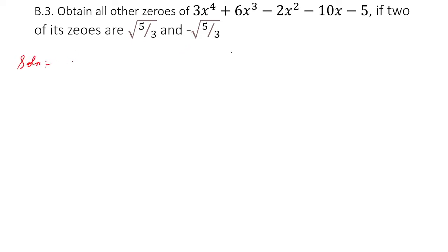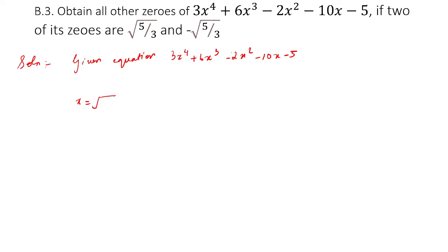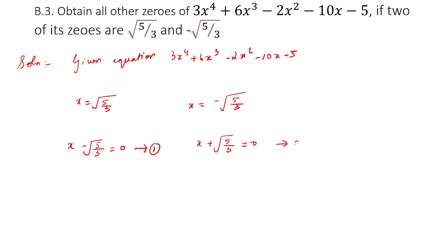Our given equation is 3x to the power 4 plus 6x cubed minus 2x squared minus 10x minus 5. Two of its zeros are given: x equals root of 5 by 3, and x equals minus root of 5 by 3. So I'll write this as x minus root 5 by 3 equals 0 as equation 1, and x plus root 5 by 3 equals 0 as equation 2.